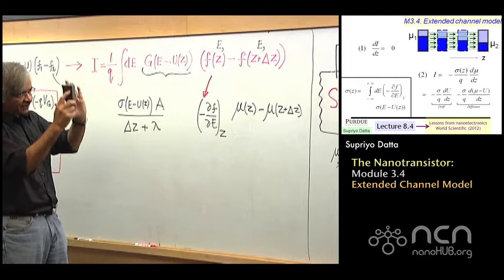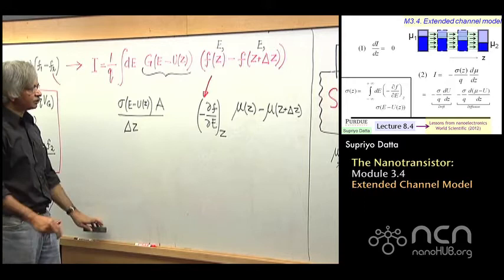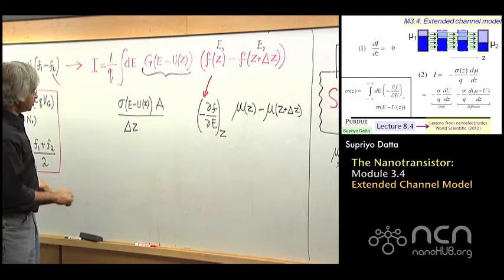So when you are trying to use this equation to describe something inside the channel, we should not include the interface part of it — you should use just something like delta Z alone.